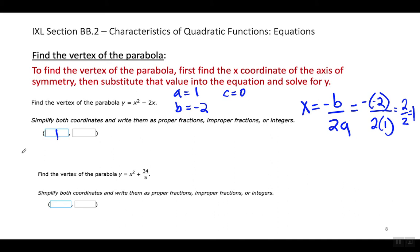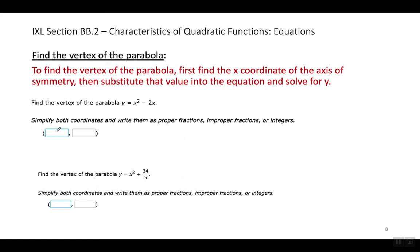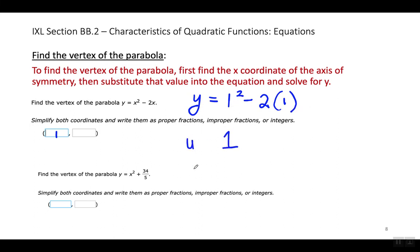Now to find the Y coordinate, all I've got to do is substitute 1 for X into this equation and solve for Y. When I do that, I'm going to have Y equals 1 to the second power minus 2 times 1. One to the second power is 1, and 2 times 1 is 2. What's 1 minus 2? Negative 1. So my vertex is (1, negative 1).